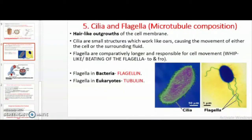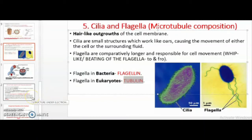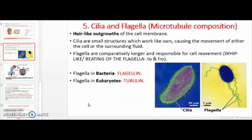Let's continue with the last pair of cell organelles meant for cell movement and motility: cilia and flagella. Both are extensions and outgrowths of the cell membrane. Cilia tend to be shorter and mostly cover the entire surface of a cell, whereas flagella are more localized, longer, and either singular or fewer in number. Flagella are present in both bacterial and eukaryotic cells, but differ in composition. Bacterial flagella are made up of a protein called flagellin, whereas eukaryotic flagella are made up of microtubular filaments — the protein is tubulin. The flagella has three parts: the basal body, the hook, and the filament. The basal body and hook are embedded into the cell membrane.